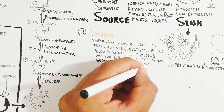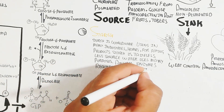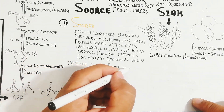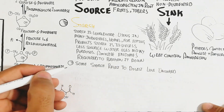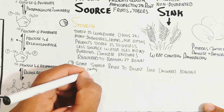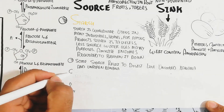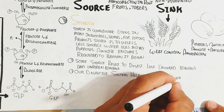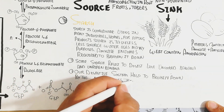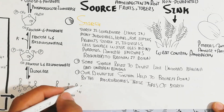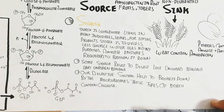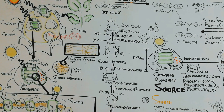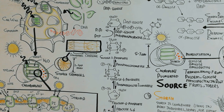Some starches resist digestion, like those found in uncooked banana, unripe banana, and uncooked rice. Our digestive system cannot digest cellulose because cellulase enzyme is absent in humans. However, Ruminococcus bacteria present in our gut microbiota provide cellulase to digest cellulose and produce short-chain fatty acids. This type of indigestible starch is known as resistant starch; other undigested material is excreted as waste.